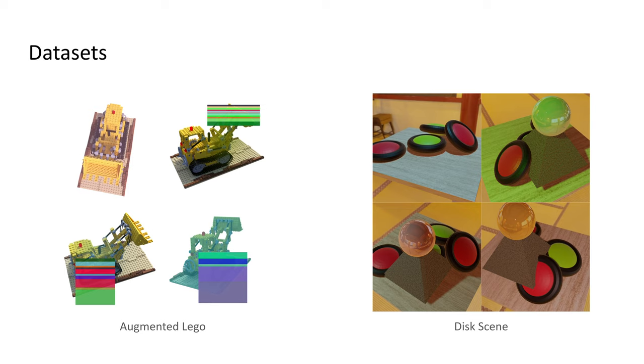The disk scene dataset is created using Blender and using Blender Python scripting. It is composed of a static scene with disks on a table and dynamic object, which is a pyramid with reflective sphere on top. For each image, the position, color, and intensity of the light source is randomized to simulate variable lighting, and the position of the dynamic object is also randomized using the Python script.